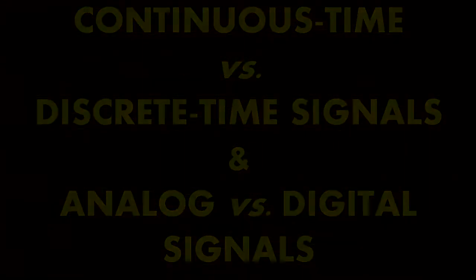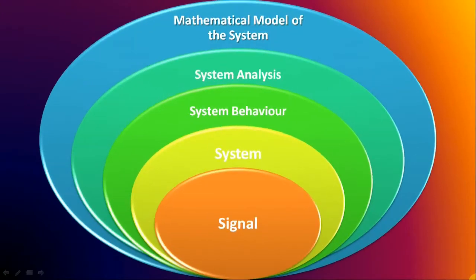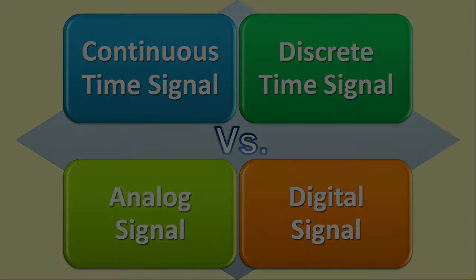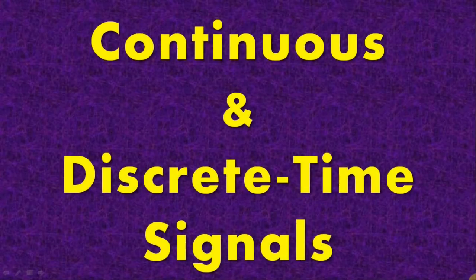In my preceding short video lecture, I had described various terms namely Signal, System, System Behavior, System Analysis, and Mathematical Model of the System. In this short video lecture, I will first describe the Continuous Time and Discrete Time Signals and thereafter the Analog and Digital Signals. I will also highlight why the terms Analog and Digital should not be confused with the terms Continuous Time and Discrete Time. So let us now understand the Continuous and Discrete Time classifications of the signals.